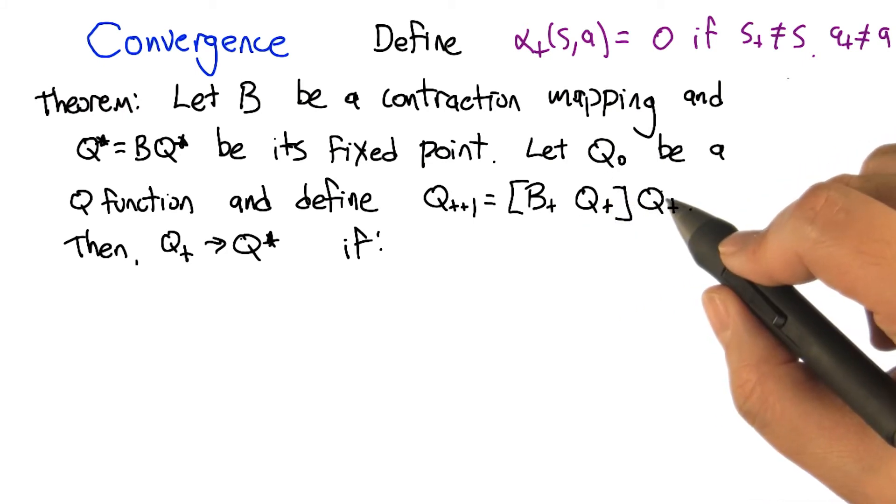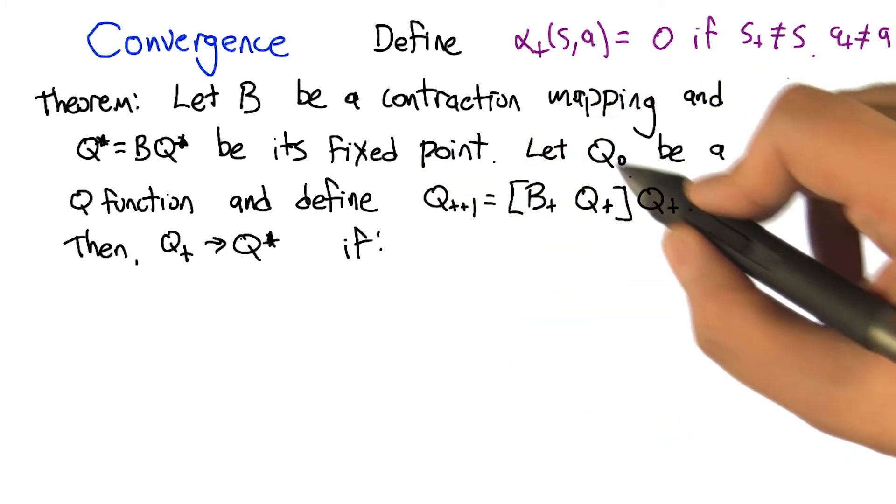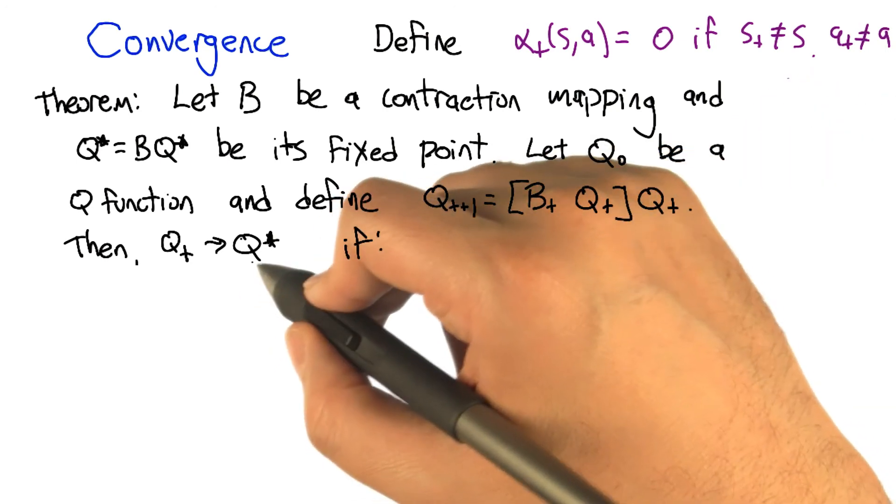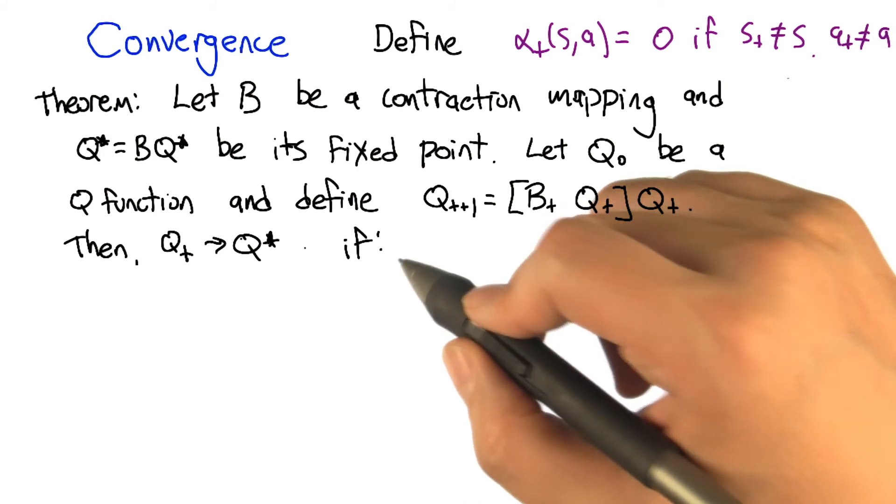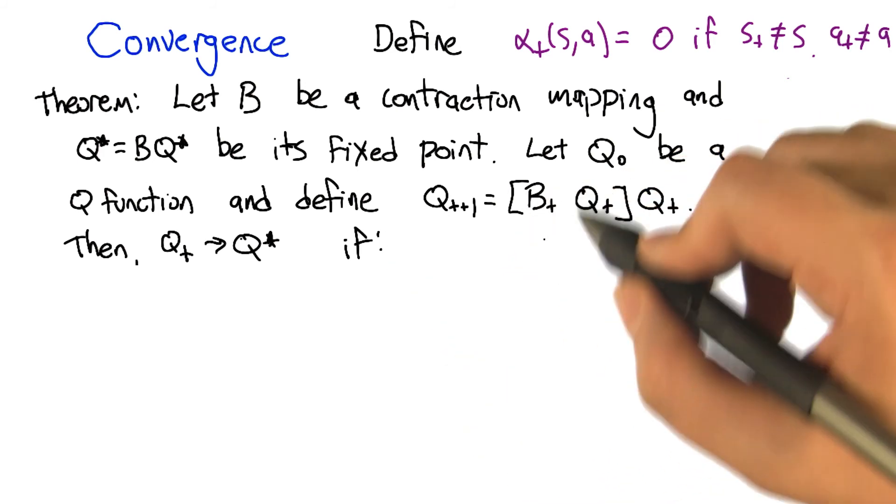But we'll get to that in a moment. Here's the cool thing: this sequence of Q functions, starting from any Q₀ that we want, as long as we keep applying this, is going to converge to Q*—as long as we have certain properties holding on how we define these B_T's. Let's take a look at the details.